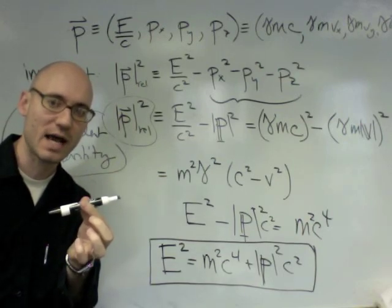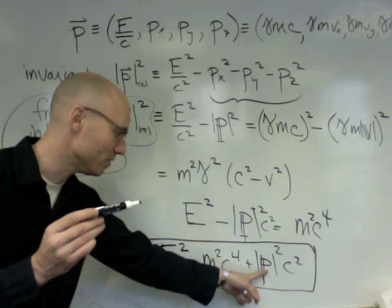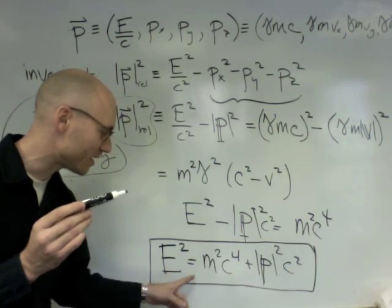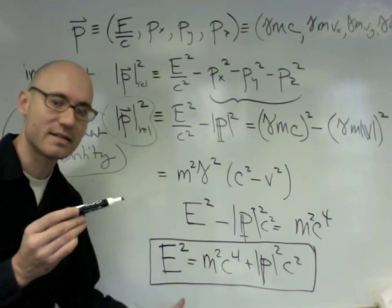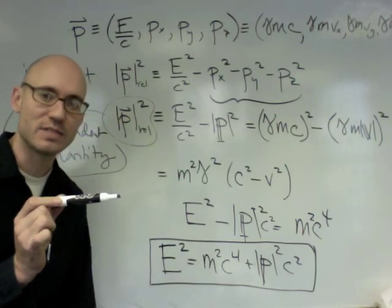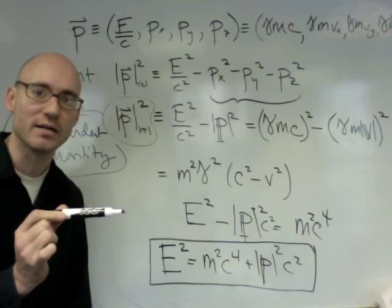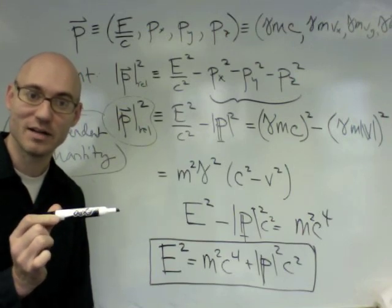And then this becomes E squared equals m squared c to the fourth. I can take the square root of that expression. And you would say E equals mc squared, the most important equation in all of physics.